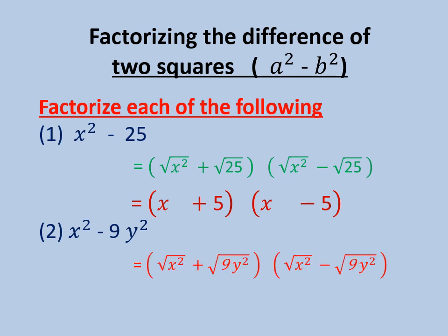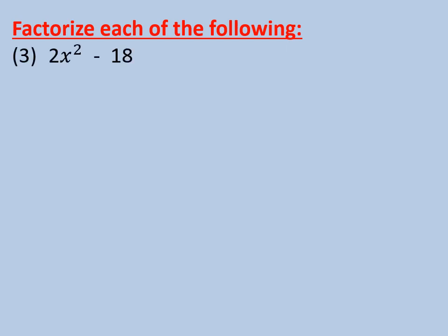Two brackets: root of the first plus root of the second, times root of the first minus root of the second. So the factorization will be (x + 3y)(x - 3y). Number 3: 2x² minus 18. First we will take the common factor 2.